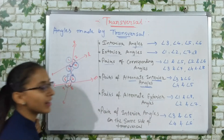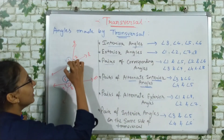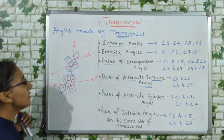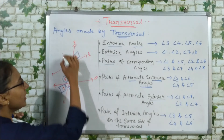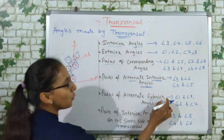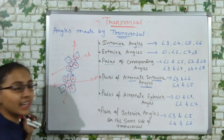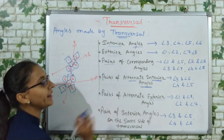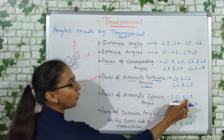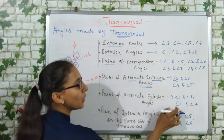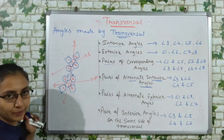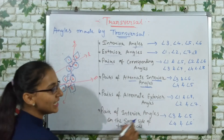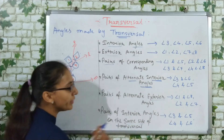Now the pair of alternate exterior angles. The exterior angles are 1, 2, 7, and 8. Angle 1's alternate is angle 8, so 1 and 8 are alternate exterior angles. And 2 and 7 are alternate exterior angles. So we get two pairs: angle 1 & angle 8, and angle 2 & angle 7.